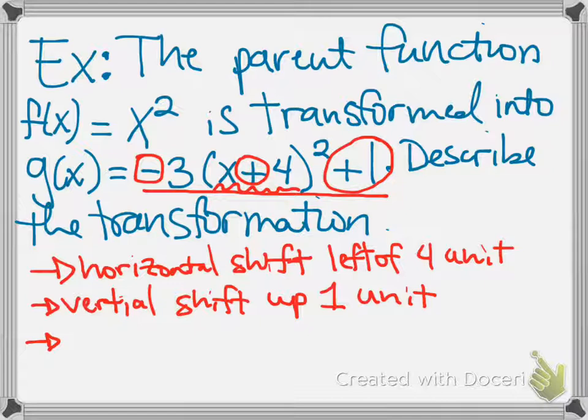And because this negative sign is being applied outside of what's being done to x, meaning it's outside the squaring part of this function, that means we're applying that negative to all the y values. And if we're applying it to the y values, that means we're going to have a reflection across the x-axis.